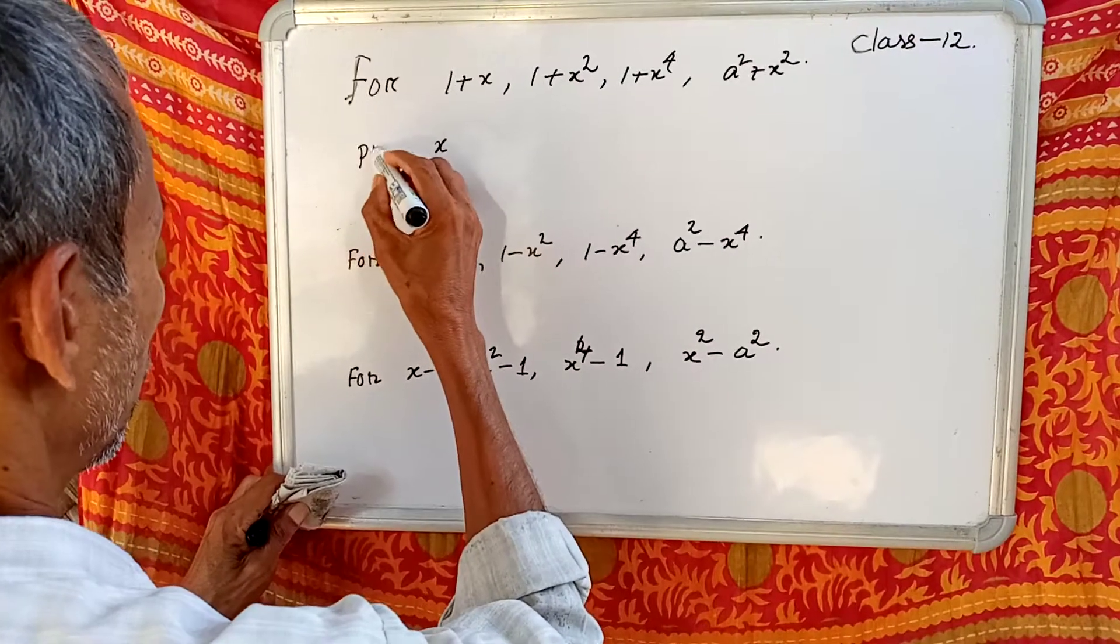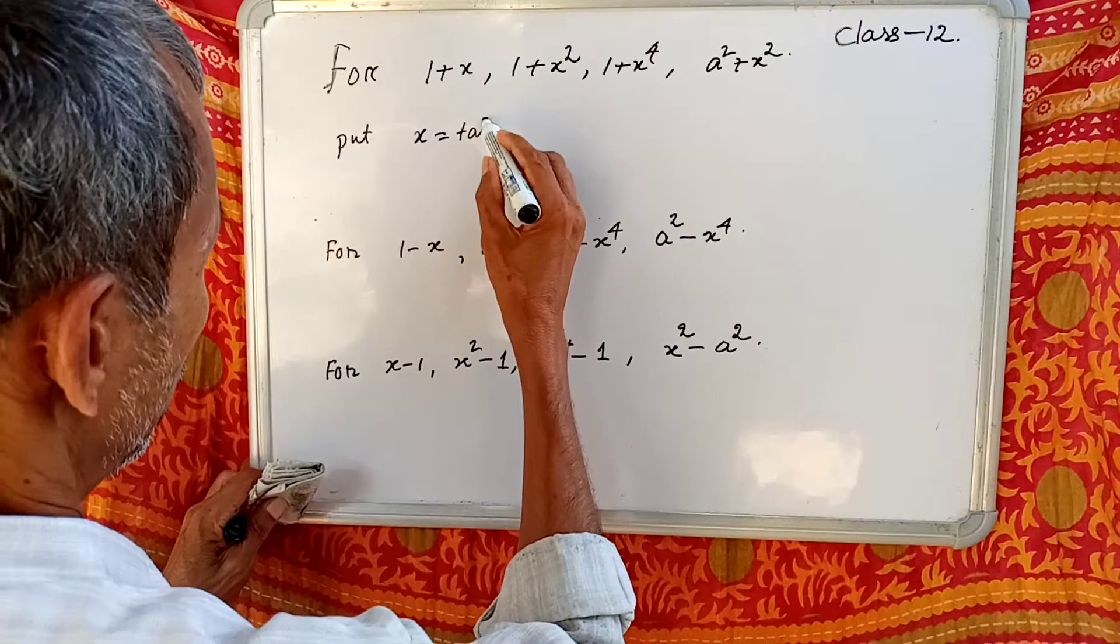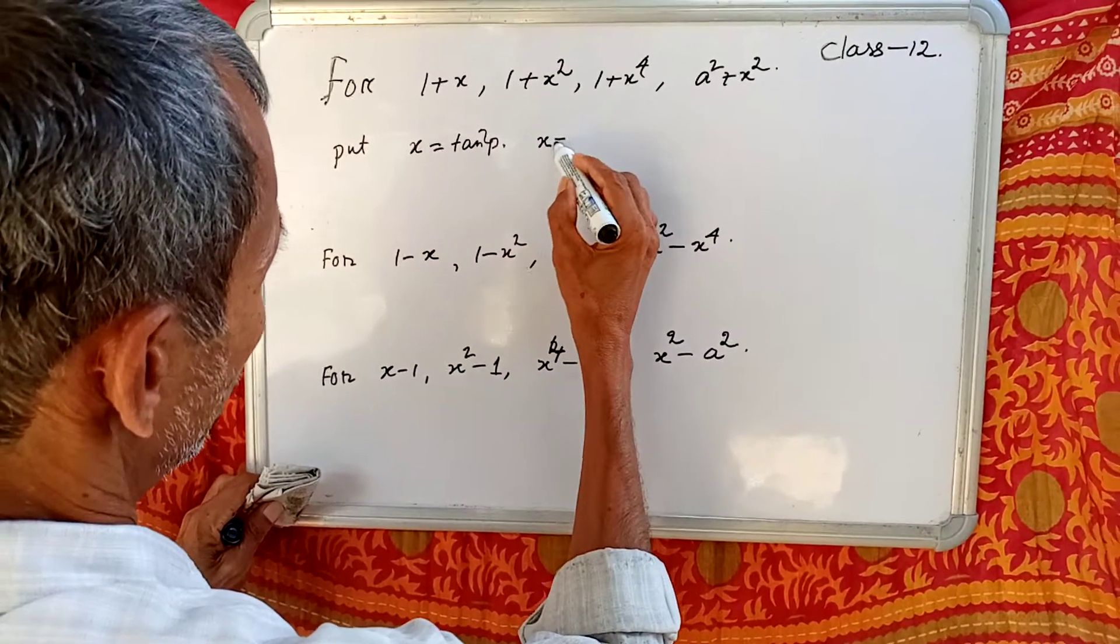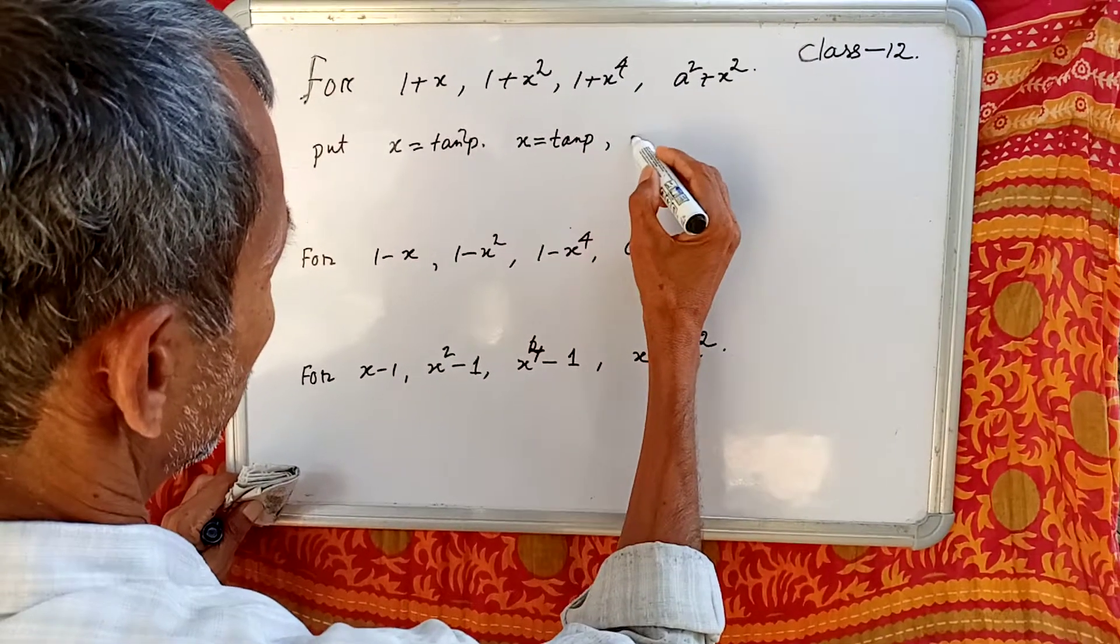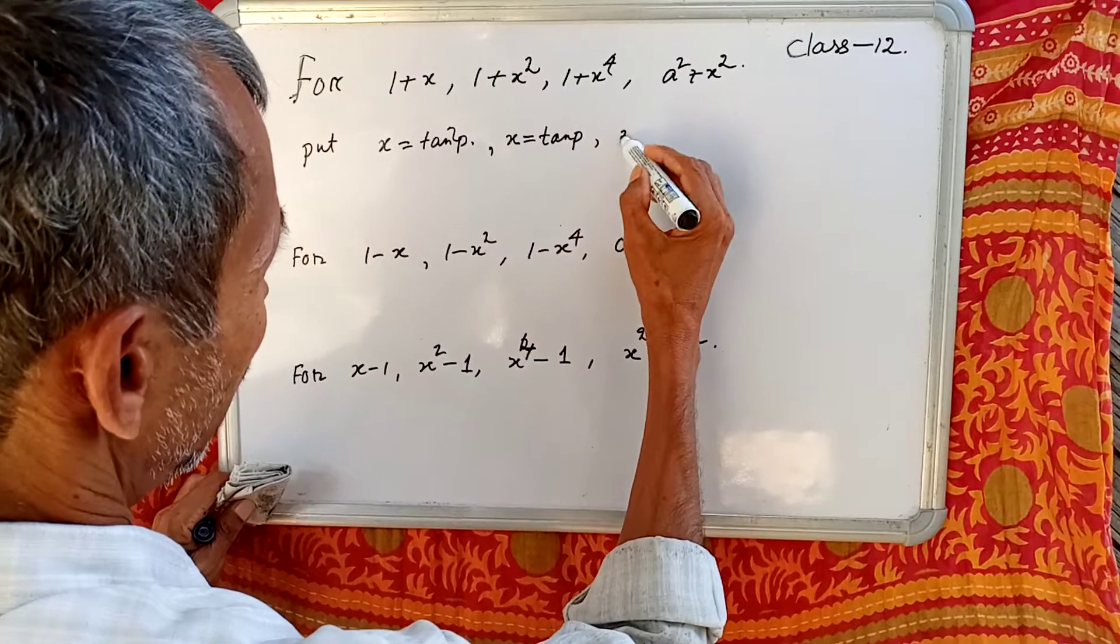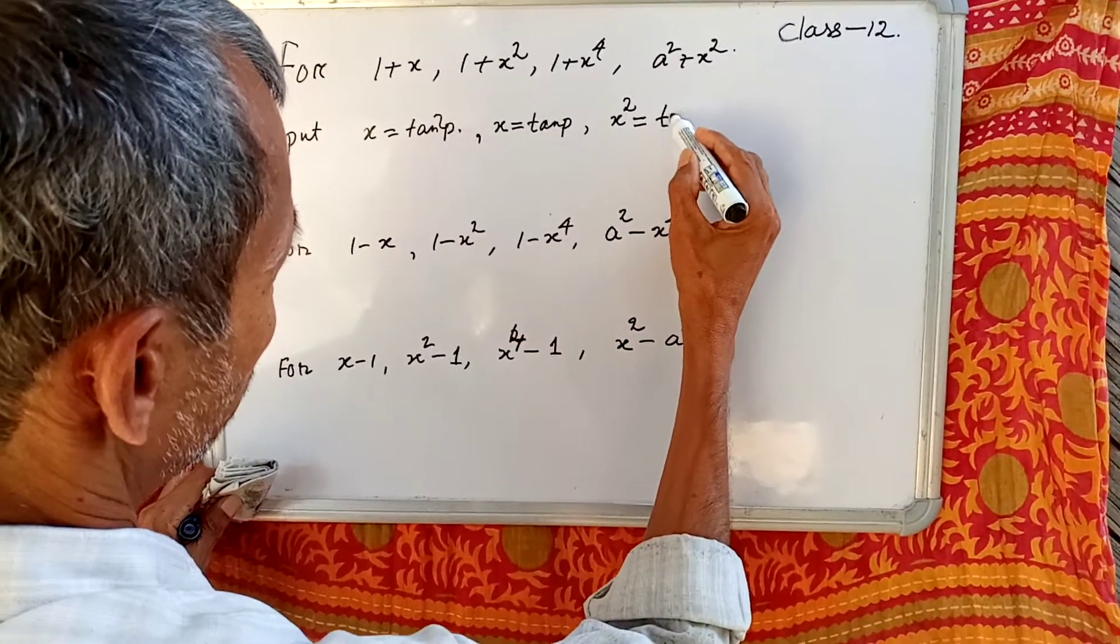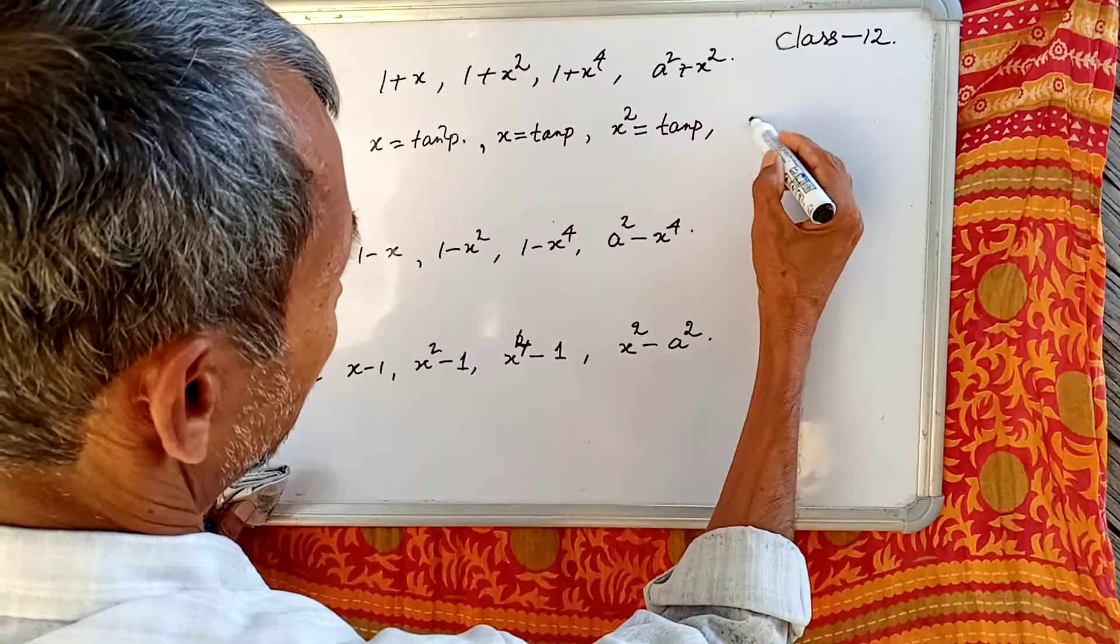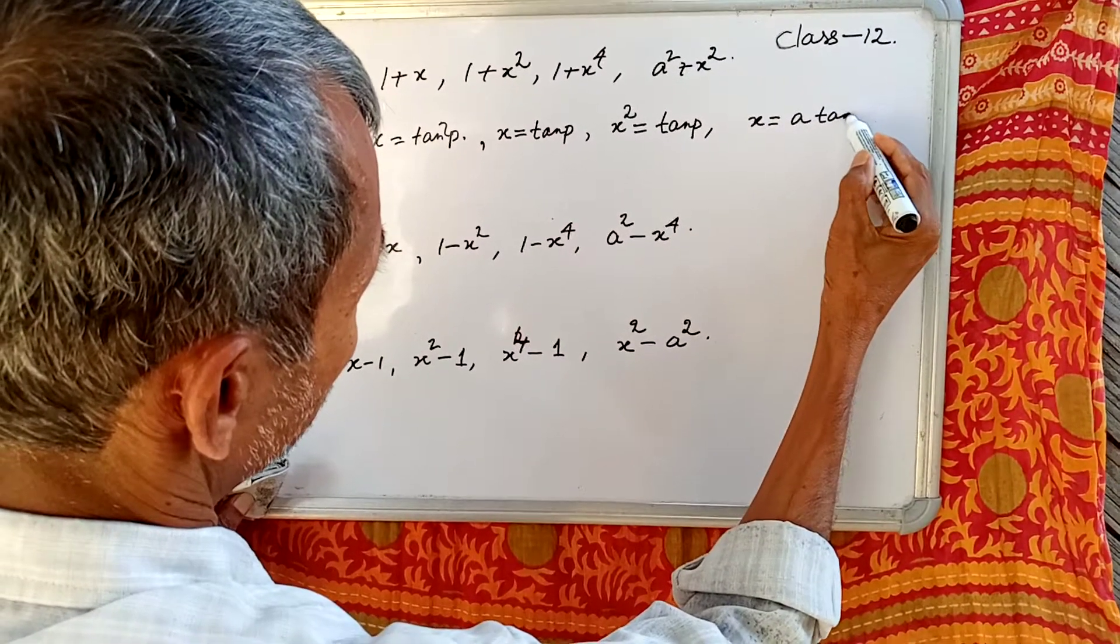For here, put x equal to tan² θ. For here, x equal to tan θ. For here, x² equal to tan θ. For here, x equal to a tan θ.